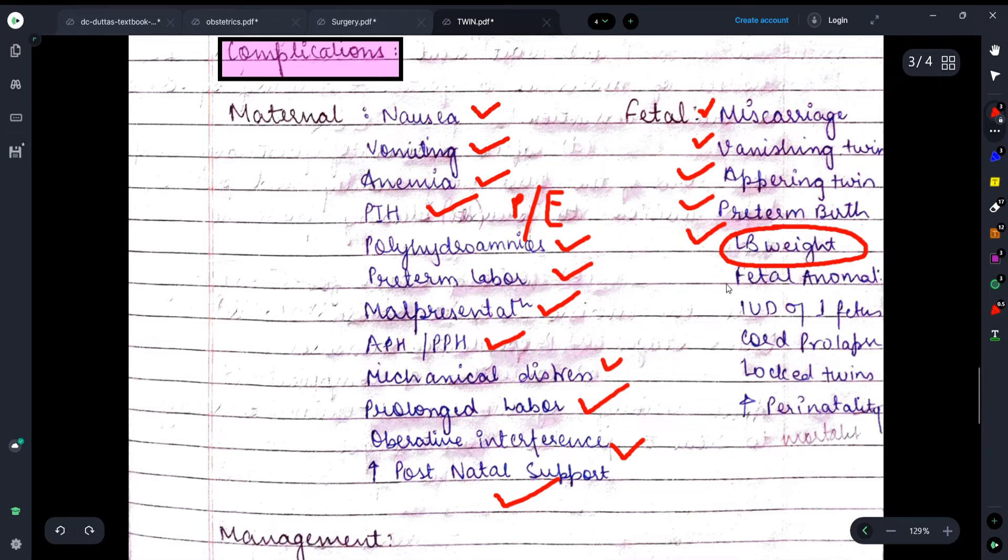Intrauterine death of one fetus occurs, which case I just explained - one fetus is delivered and the other has IUD. Next, cord prolapse case can be seen. Locked twins - there are chances that the twins might be intermingled or locked, due to which delivery may have difficulty. Perinatality increases, and mortality rate of the fetus also sometimes increases, which we can see here in this condition during twin pregnancy.